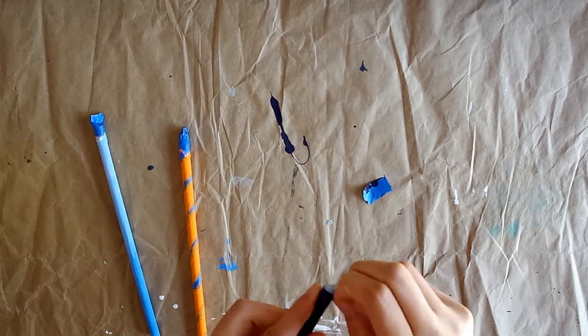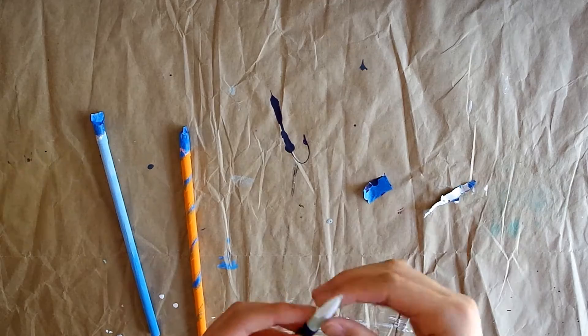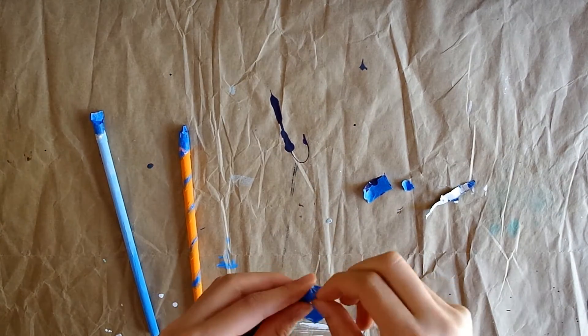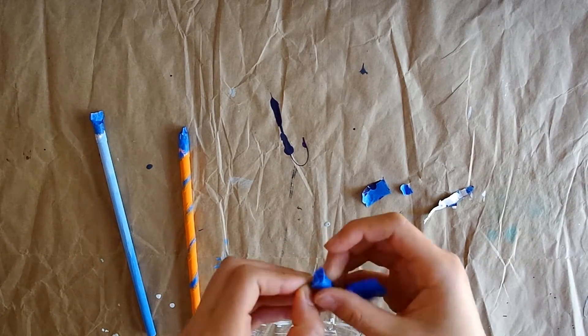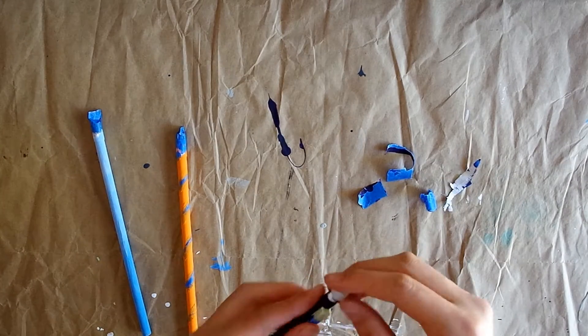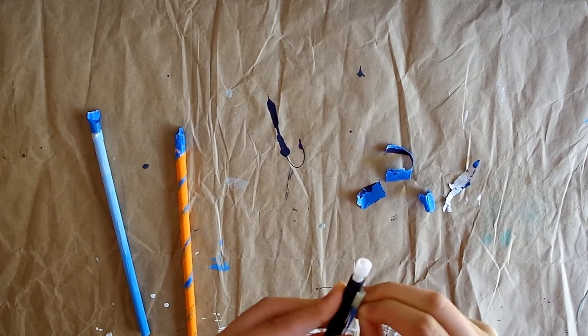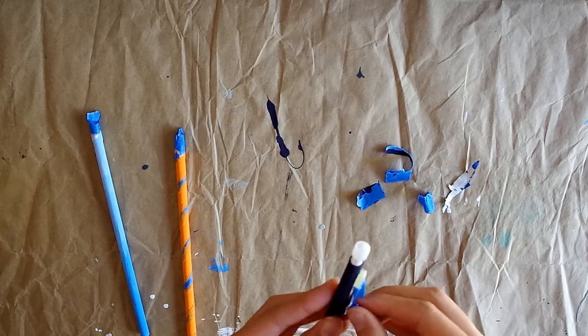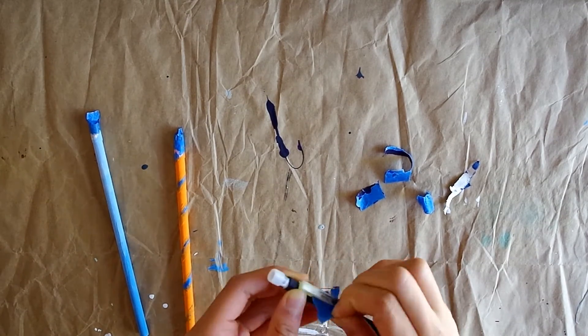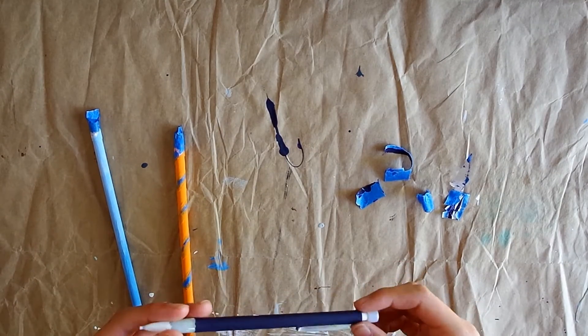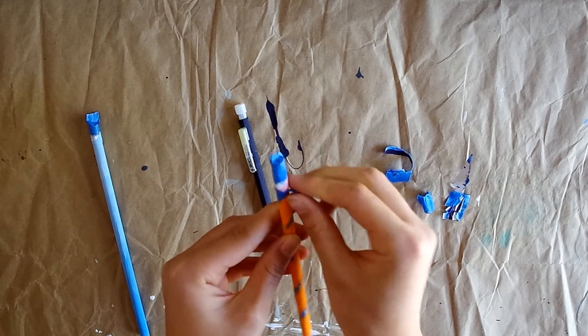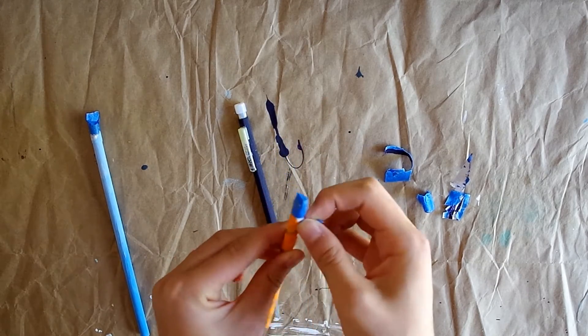Once you have the primary main colors of the pencils painted, then you feel free to take off the extra tape. You can apply more tape onto parts of the pencil that you don't want paint on. It's honestly really satisfying when you peel away the tape because it's so smooth and such a clean edge.